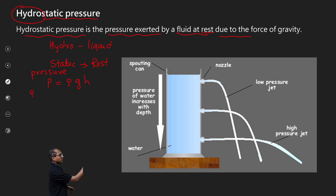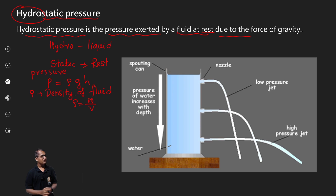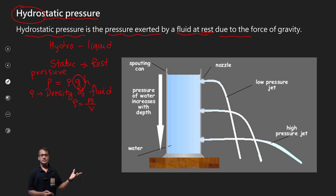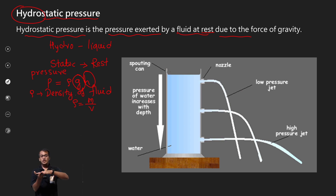So rho is the density of the fluid. Density means mass divided by volume — rho is the ratio of mass to volume. G means the acceleration due to gravity. H is the height — that is, the height of the column of fluid or liquid.